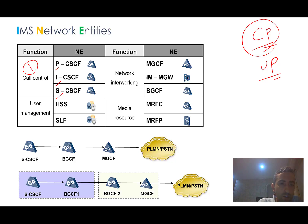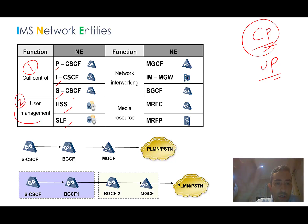The second part is user management, which includes the HSS and SLF — Subscriber Locator Function. SLF is used when you have a large number of subscribers and more than one HSS — for example two or three. It selects the appropriate HSS based on which HSS a given subscriber belongs to.